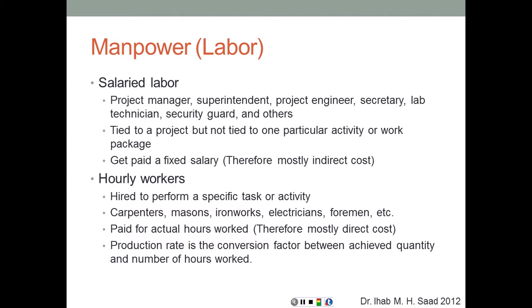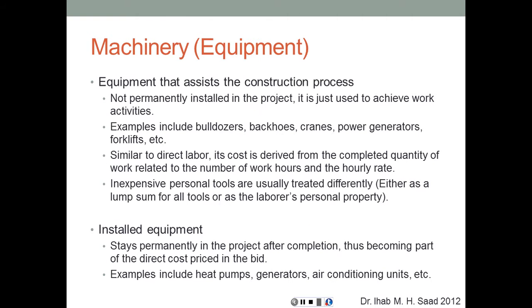The production rate of hourly workers is a conversion factor between achieved quantity and hours worked: P = Q / T, where P is production rate and T is duration or time equals Q divided by P. This gives units like cubic yards per hour or tons per day.